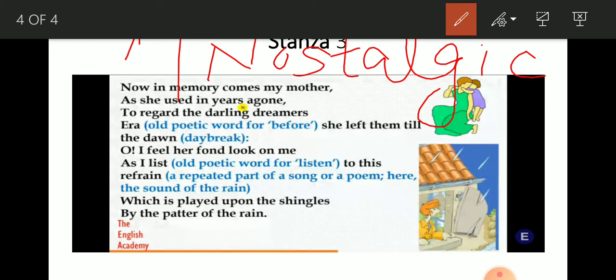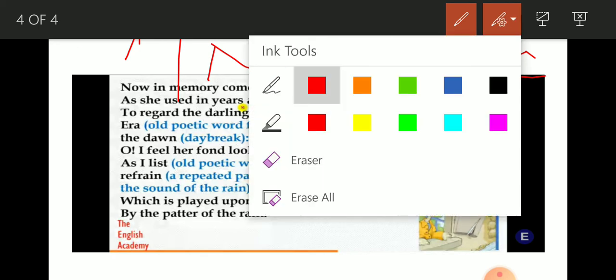When a person gets into nostalgia, when a person becomes nostalgic, he fondly remembers his past and experiences a mixed feeling of joy and sorrow. He is joyful because he enjoyed those precious moments happily, and he is sad because those precious moments are no more. So it's a mixed feeling of pleasure and sorrow, the feeling of nostalgia.